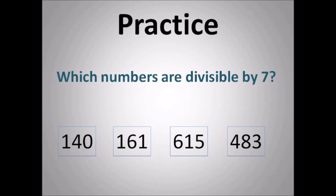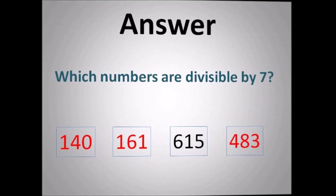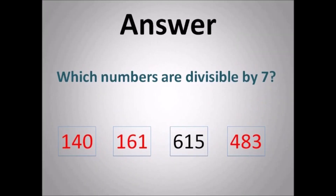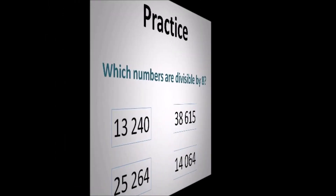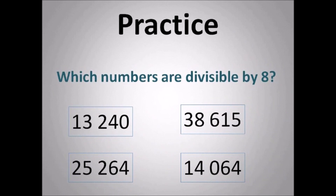Which numbers are divisible by 7? Remember the rule — you double the last number and subtract it from the number at the front. If you double 0, you get 0, and 14 at the front — that's straightforward, divisible by 7. If you double 1, 1 times 2 is 2, and 63 minus 2 is 14 — so that is divisible. Then double 3 gives 6, and the answer is 42 — divisible by 7.